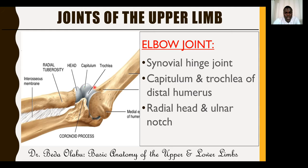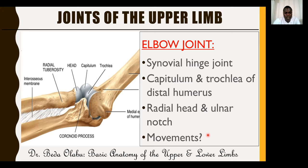Being a hinge joint, the elbow allows movement only in one axis: flexion and extension. The elbow extends when you stretch your forearm, and flexes when you bring your hand near your chest or shoulder.